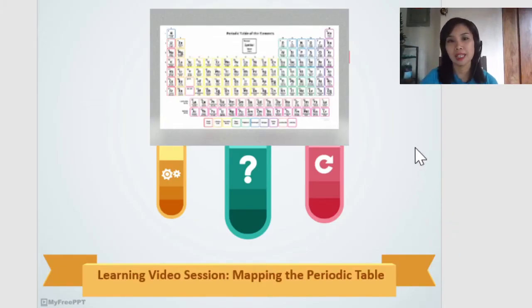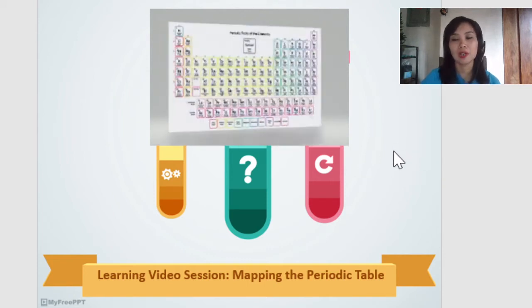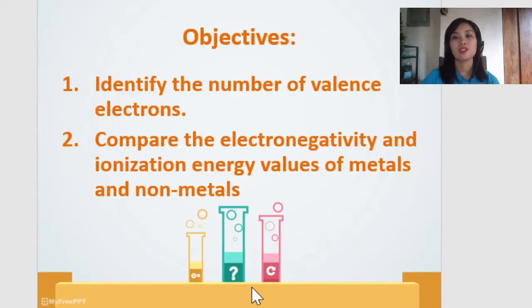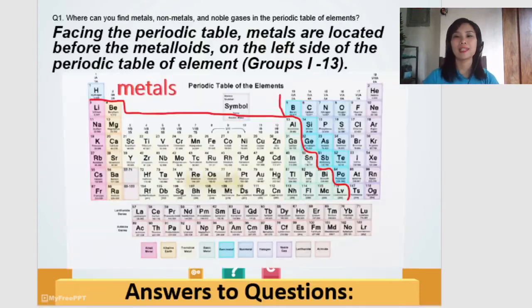Now, we have here a periodic table. Hopefully, you also have a periodic table. You're going to relate your answers, both of our answers from the activity. So we have here objectives: identify the number of valence electrons, number two, you are going to compare the electronegativity and ionization energy values of metals and non-metals. This activity highlights the location of the metals, non-metals, and noble gases in the periodic table of elements. This is important for you to realize that with the use of the periodic table, you can easily determine the kind of atom you are dealing with. So get ready now your answer. Question number one, of course, where can you find metals, non-metals, and noble gases in the periodic table of elements?